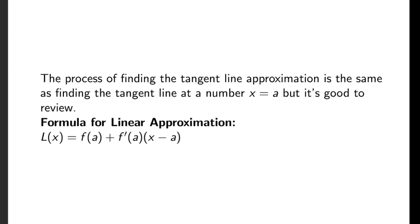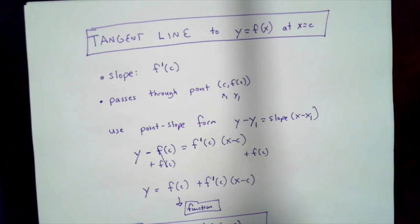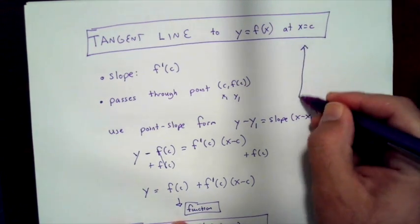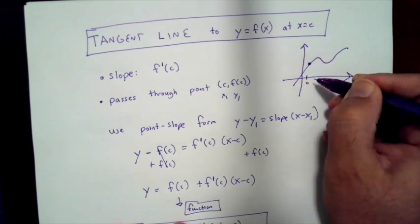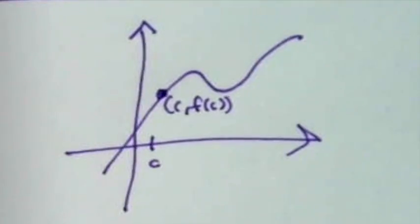But it's good to review how we get there. Remember that the tangent line to y equals f of x at x equals c has a slope of f prime of c and passes through the point c, f of c.